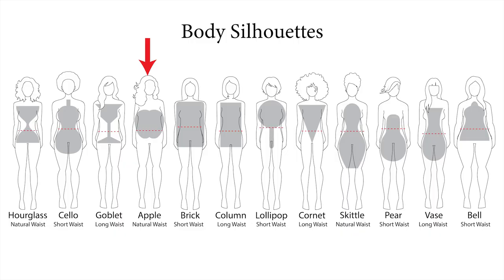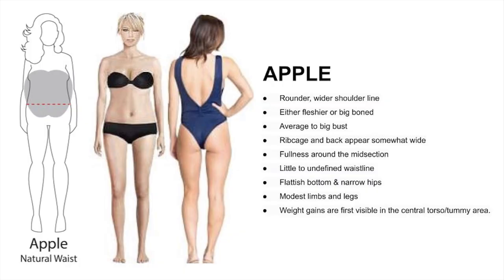When it comes to the apple shape, here are the key features: rounder, wider shoulder line, either fleshy or big-boned. Average or big bust. Rib cage and back appear somewhat wide. Fullness around the midsection with little to undefined waistline, a flattish bottom, narrow hips, modest limbs and legs. Weight gain tends to be around the torso and tummy area.